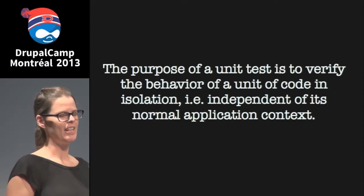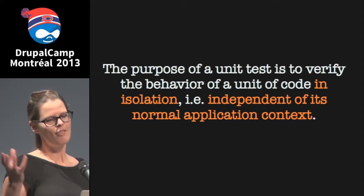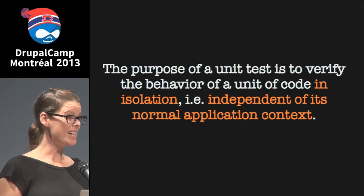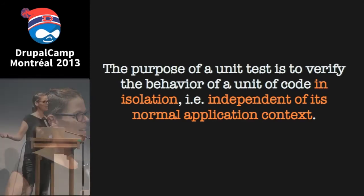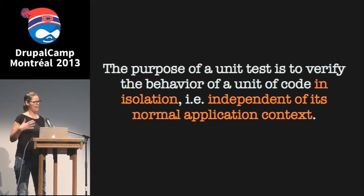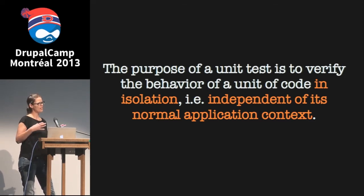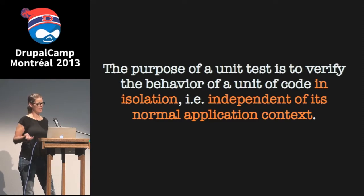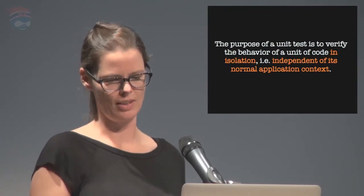Looking back at the definition of a unit test — they verify the behavior of a unit of code in isolation. This idea of context independence is key, not just to understanding why unit tests are so fast and have those benefits, but also in understanding what the implications are for code that is unit testable, because it has implications for the code itself.